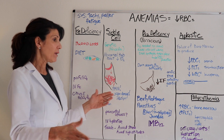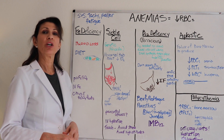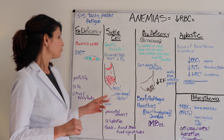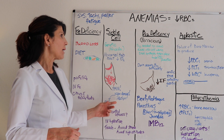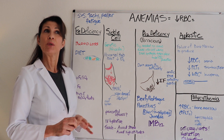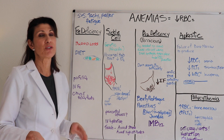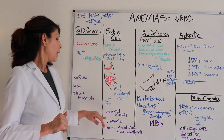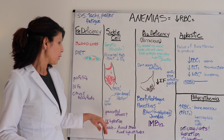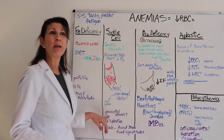Without adequate blood flow and oxygenation, patients are in a lot of pain and organ damage can occur. The kidneys are very sensitive — renal tubules are tiny — and the spleen is at high risk. Good patient education includes identifying stressors, staying away from high altitudes, being careful with exercise, and maintaining lots of hydration.